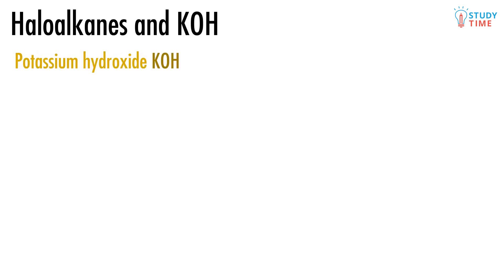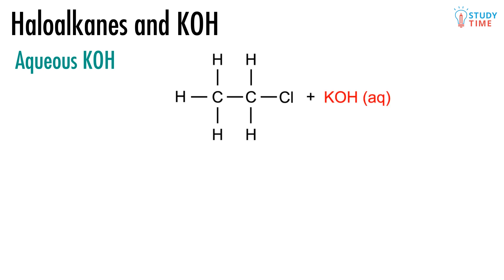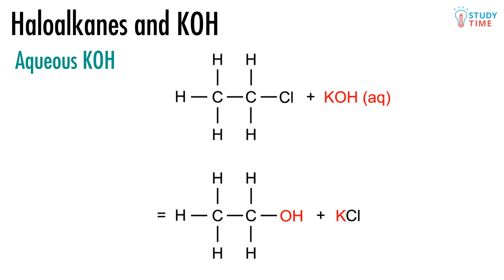Haloalkanes also react with potassium hydroxide, KOH. Depending on the conditions of that KOH, we can end up getting two different types of reactions and therefore two different types of products. We'll begin with aqueous KOH, which is the simpler of these reactions. When haloalkanes react with aqueous KOH, we get a simple substitution reaction. Here we'll look at how chloroethane reacts with aqueous potassium hydroxide. One of the products is simple potassium chloride and the other is ethanol.